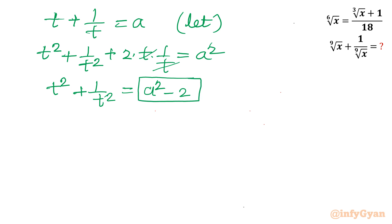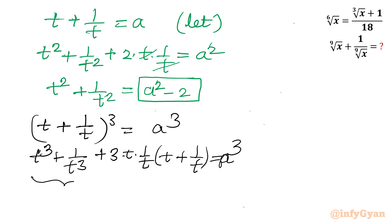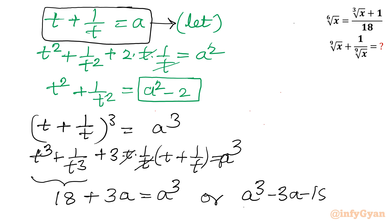Now consider cubing the expression t plus 1 over t whole cubed equal to a cubed. Applying the (a+b)³ formula gives t cubed plus 1 over t cubed plus 3 times t times 1/t in bracket times t plus 1/t equal to a cubed. Substituting the known value of 18 for t cubed plus 1 over t cubed, and a for t plus 1/t, we get 18 plus 3a equal to a cubed, which rearranges to a cubed minus 3a minus 18 equal to 0.